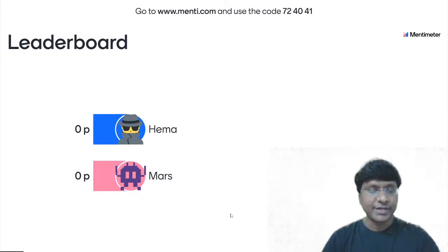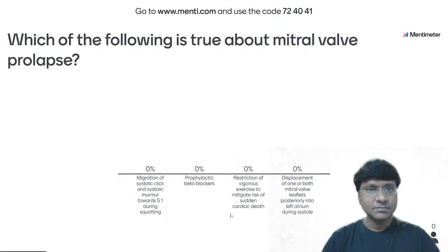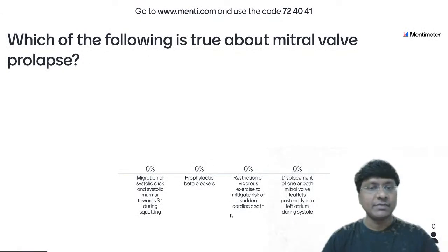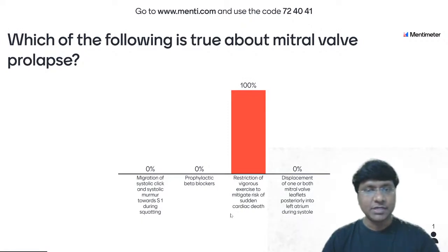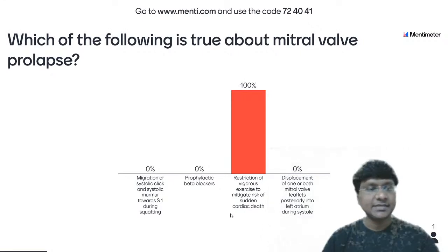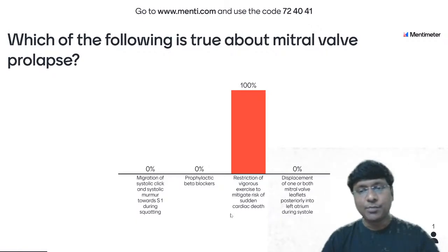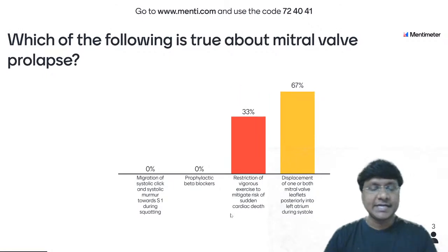Hema has answered first — very good, Hema. The next question: which of the following is true about mitral valve prolapse? Options: migration of systolic click and systolic murmur towards the first heart sound during squatting; prophylactic beta blockers; restriction of vigorous exercise to mitigate risk of sudden cardiac death; displacement of one or both mitral valve leaflets posteriorly into left atrium during systole.